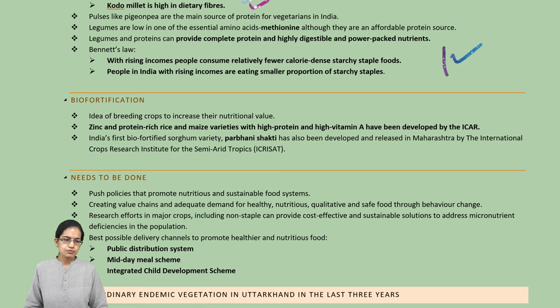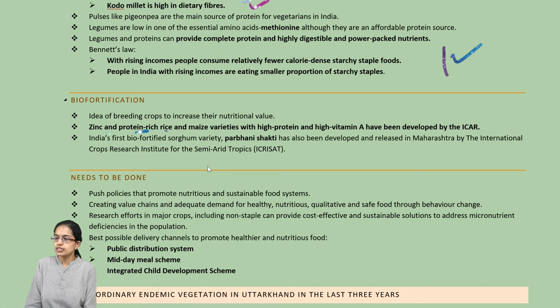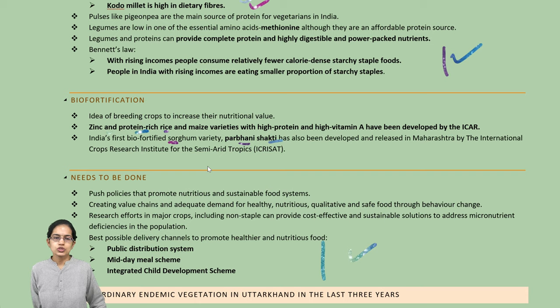ICAR, the Indian Council for Agricultural Research, has been working on maize varieties with higher proportions of zinc and protein-rich rice. Fortified sorghum under the name Prabhat Shakti is being developed and released into the market. We also need to promote healthy and nutritional food as part of the national nutrition mission through the public distribution system, midday meal schemes, and the Integrated Child Development Programs.